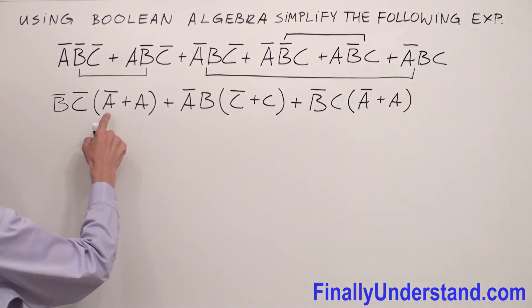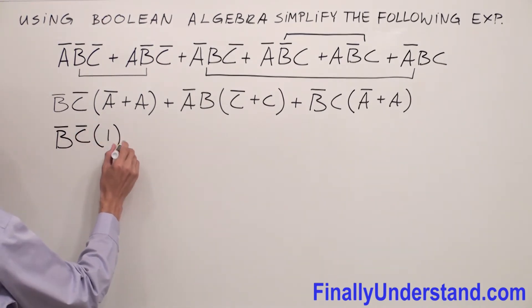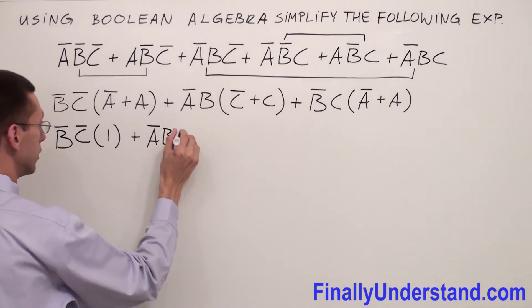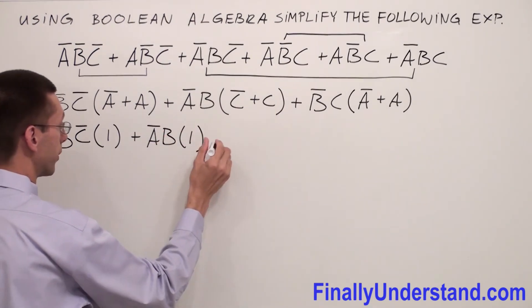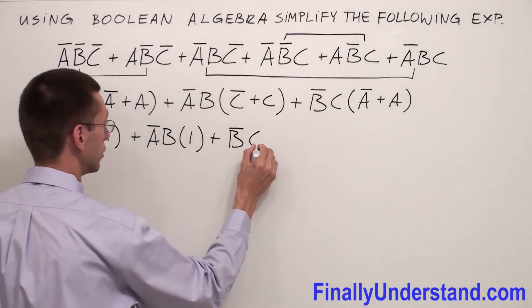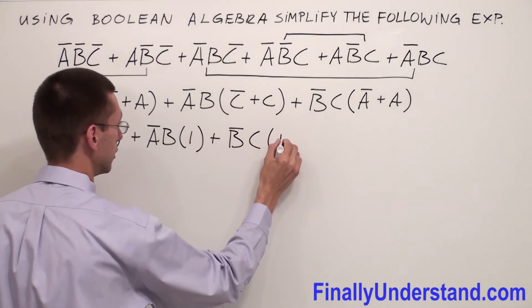Like we said before, any time we have complements together they are always equal to one. That's why I'm going to write B̄C̄ times one, or ĀB̄ times one, or B̄C̄ times one.